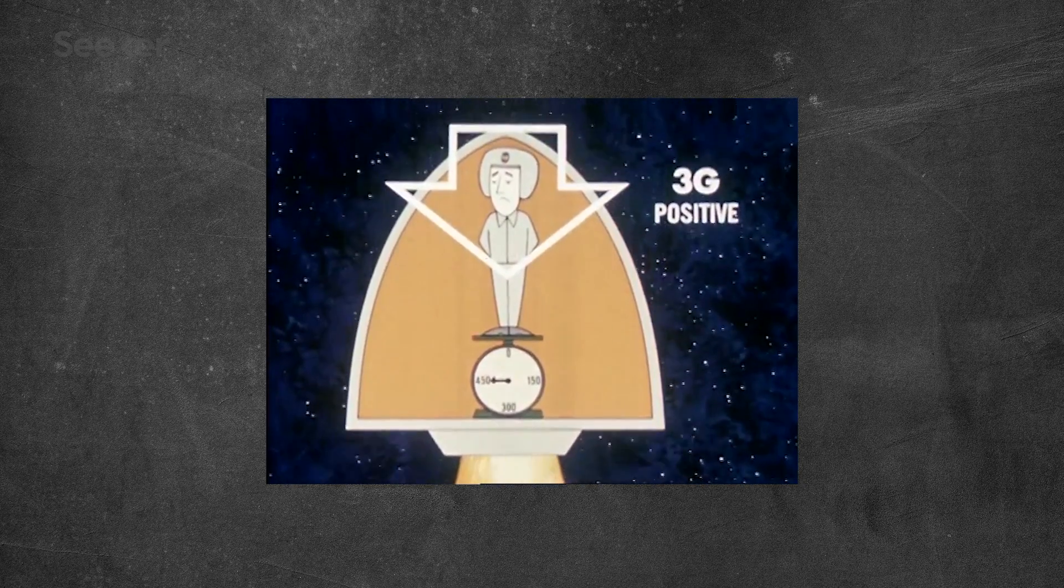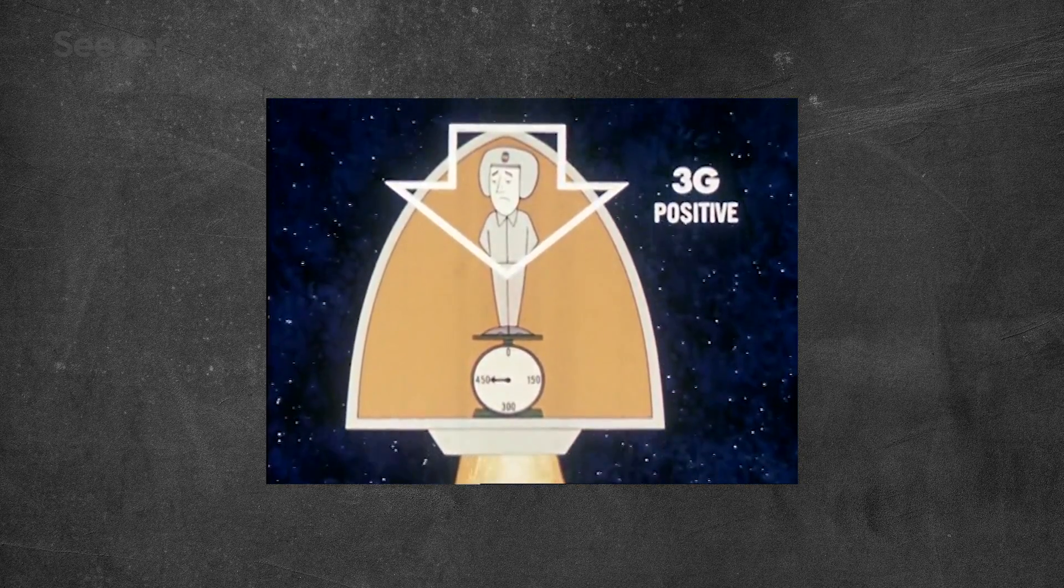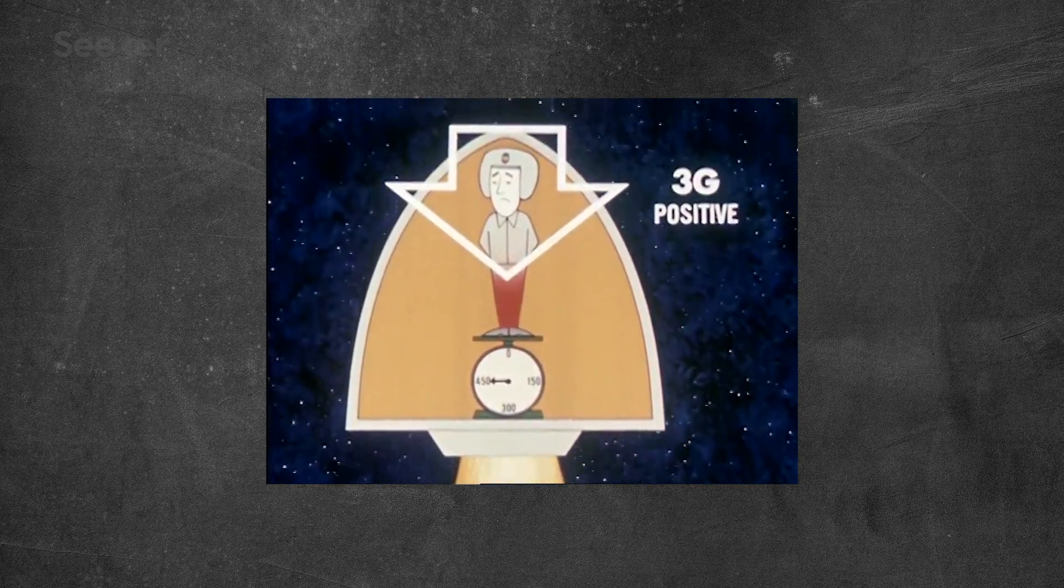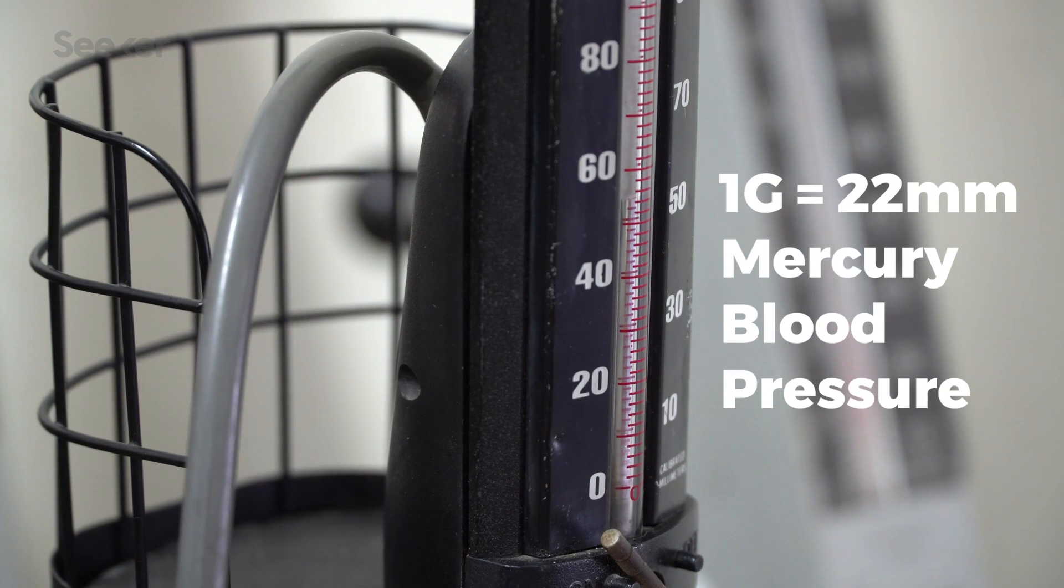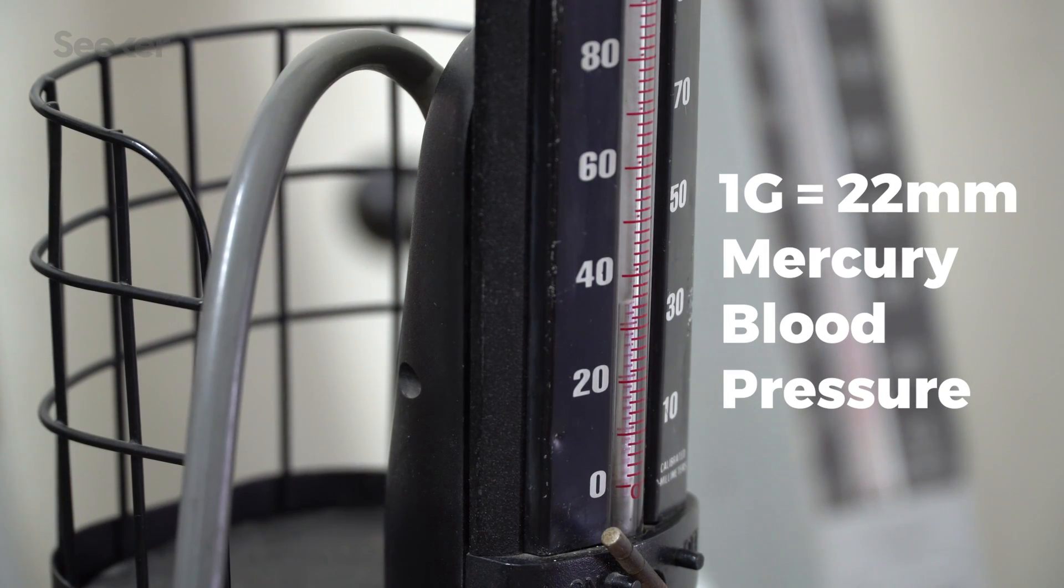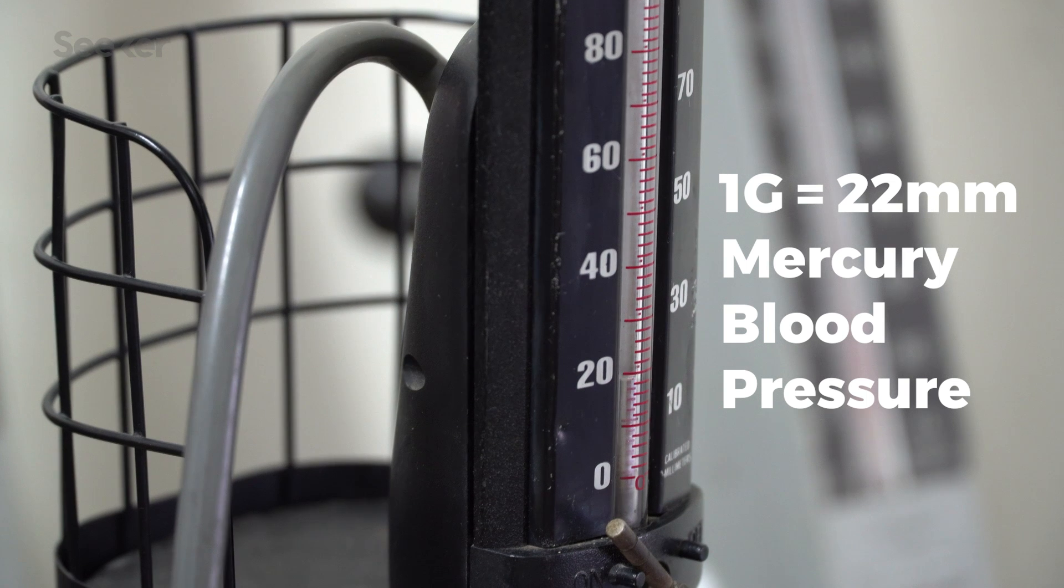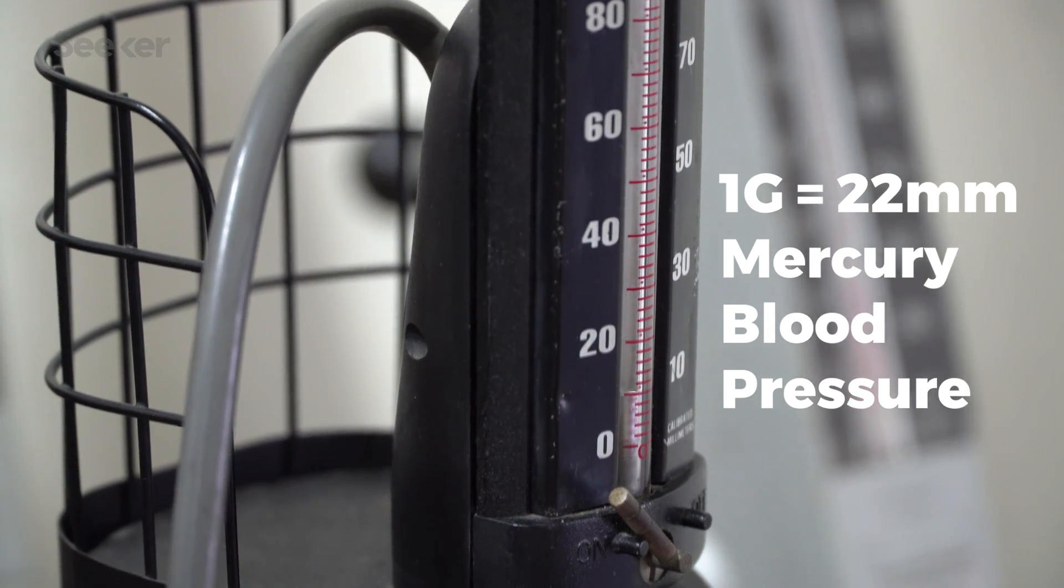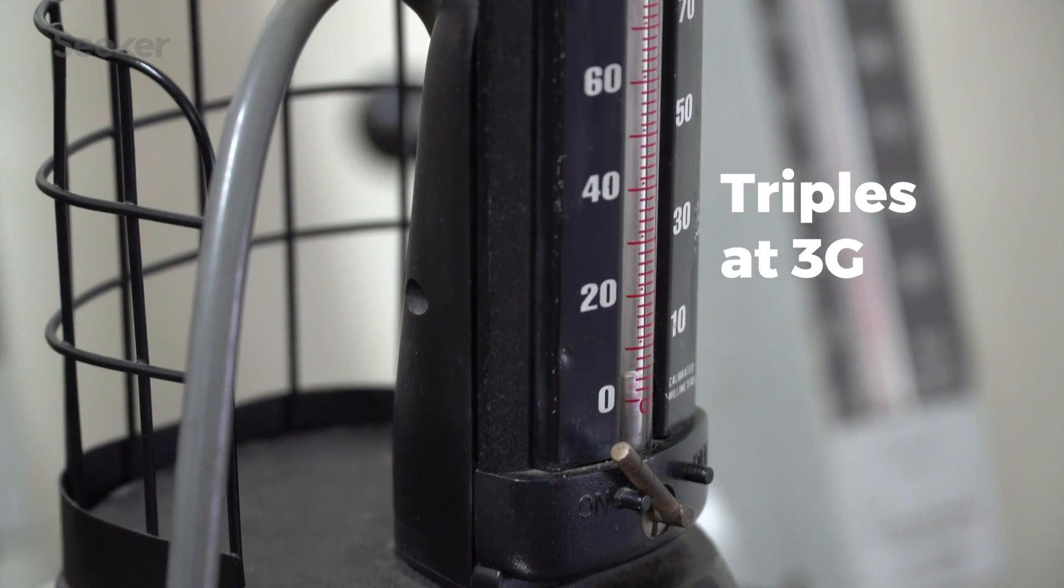And other scary stuff happens when force is applied from head to foot, and blood starts to pool in the lowest parts of our bodies. At one g, or normal conditions, our bodies require 22 millimeters of mercury blood pressure to pump blood from the heart to the brain. That requirement doubles at 2g, triples at 3g, and so on.